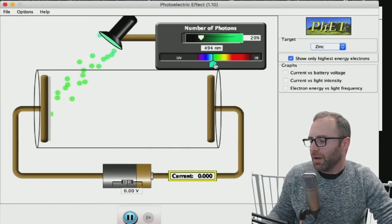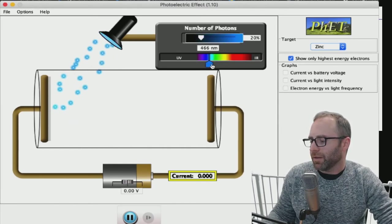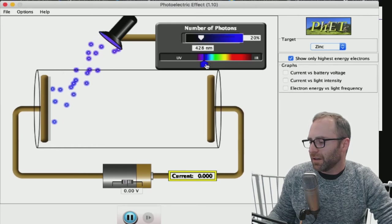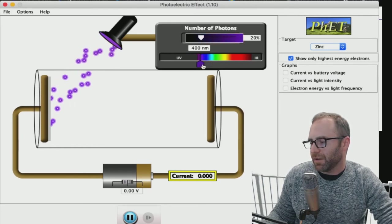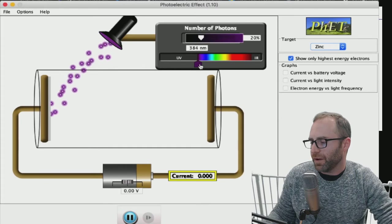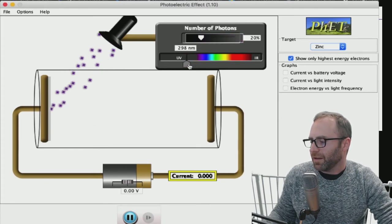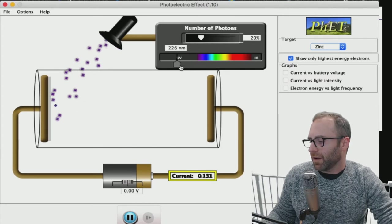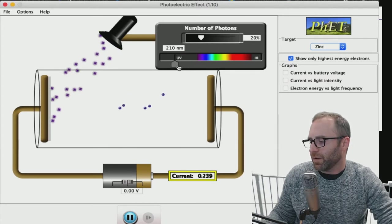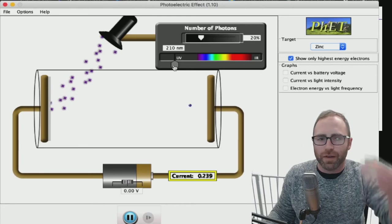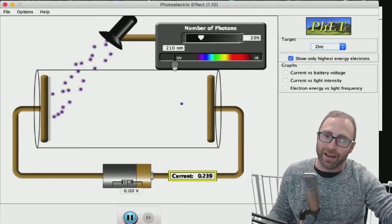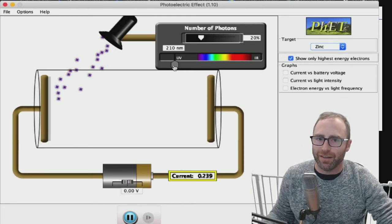So if we keep going we're going to higher and higher energies, we're now in the purple pretty strong energy, oh man now we're going out into ultraviolet. Okay so now we're really talking about, so it took us getting out into the ultraviolet range for zinc in order for us to start ejecting electrons.